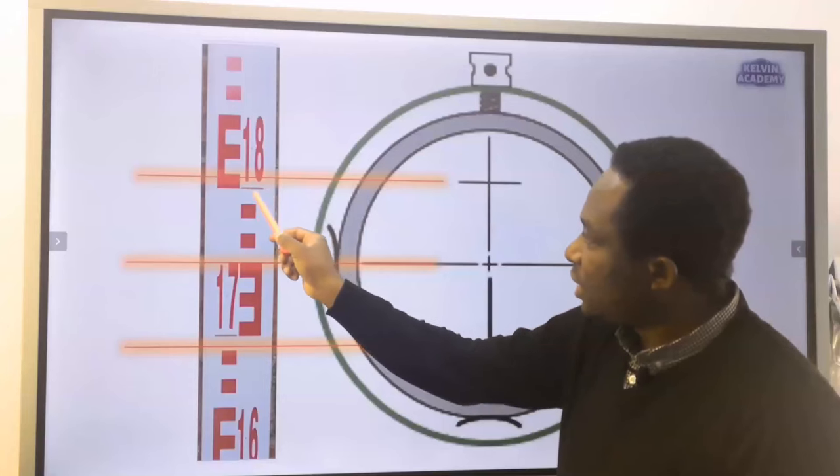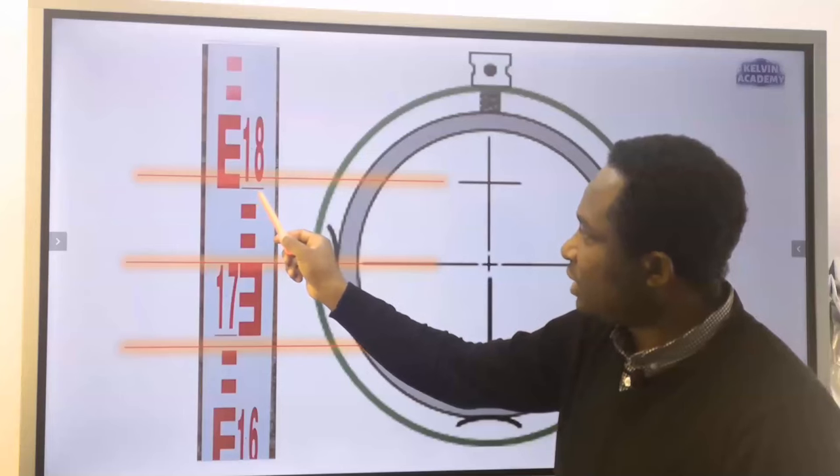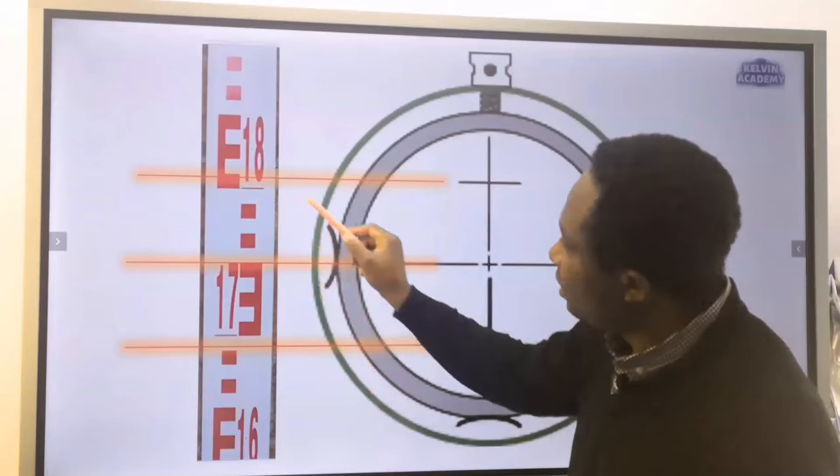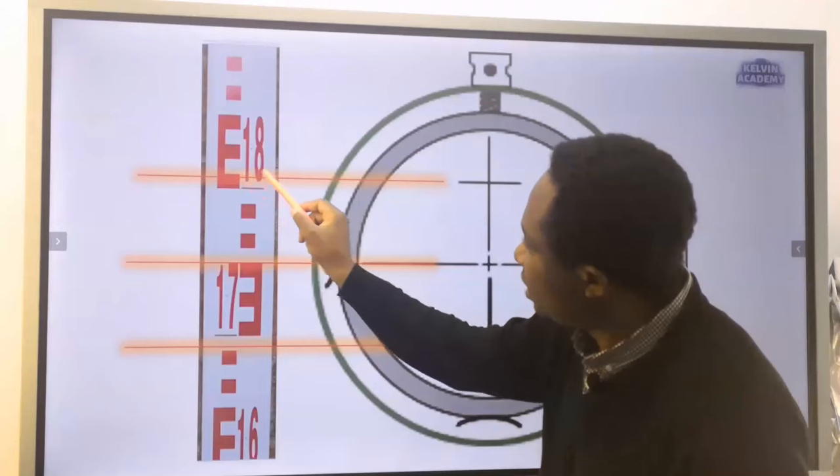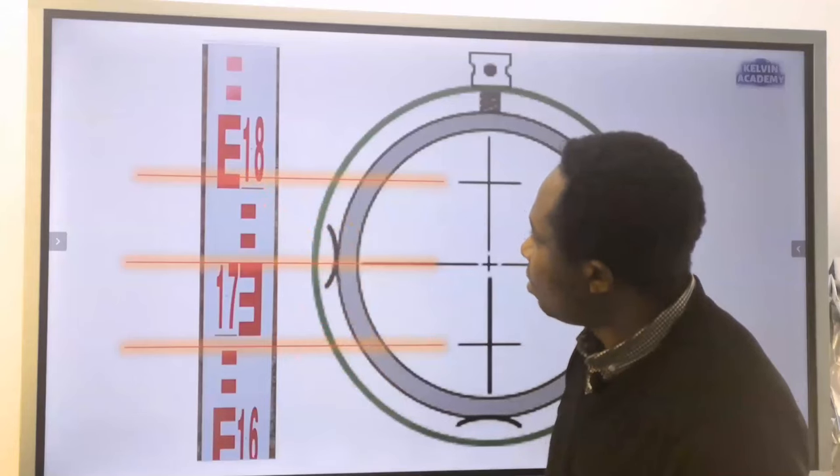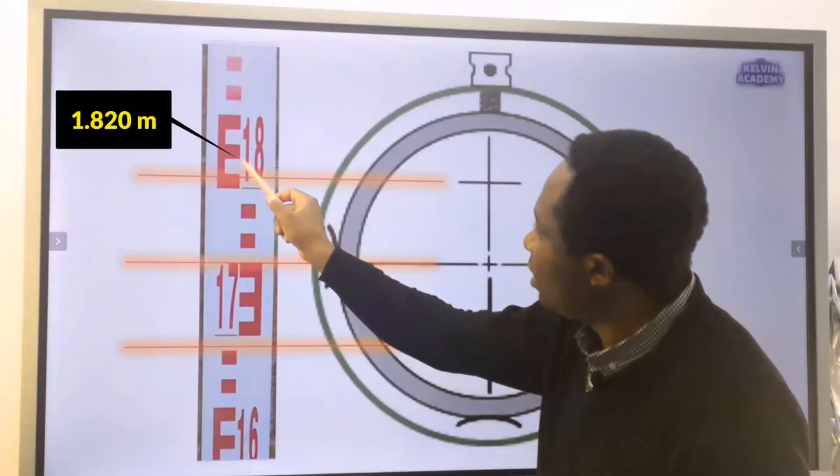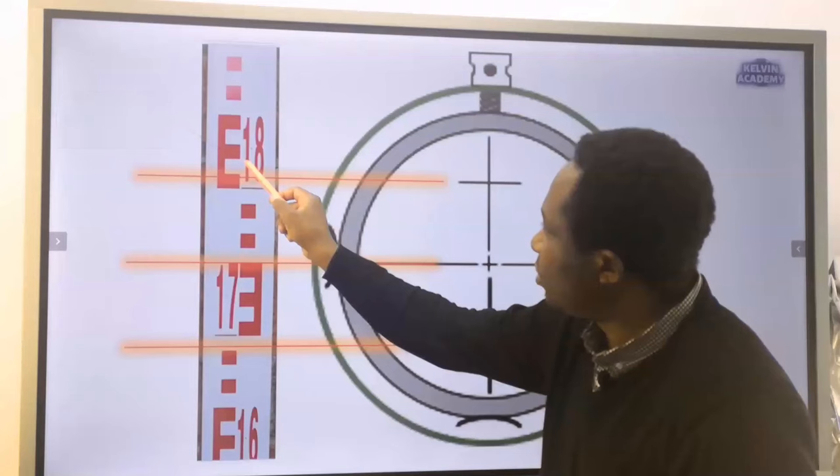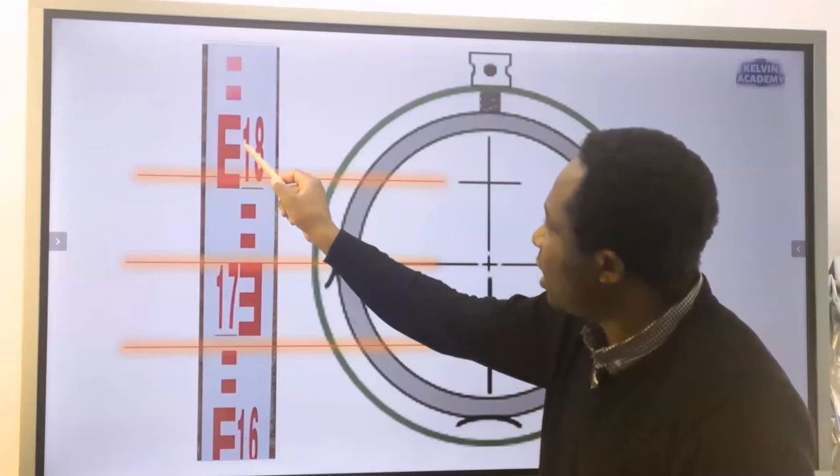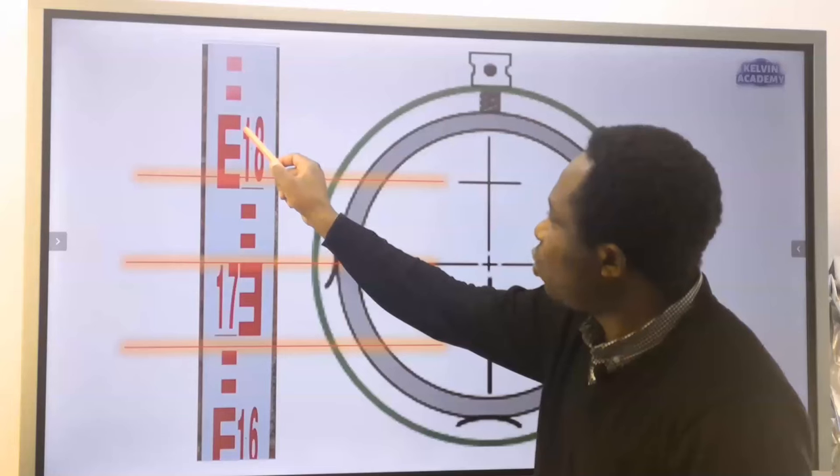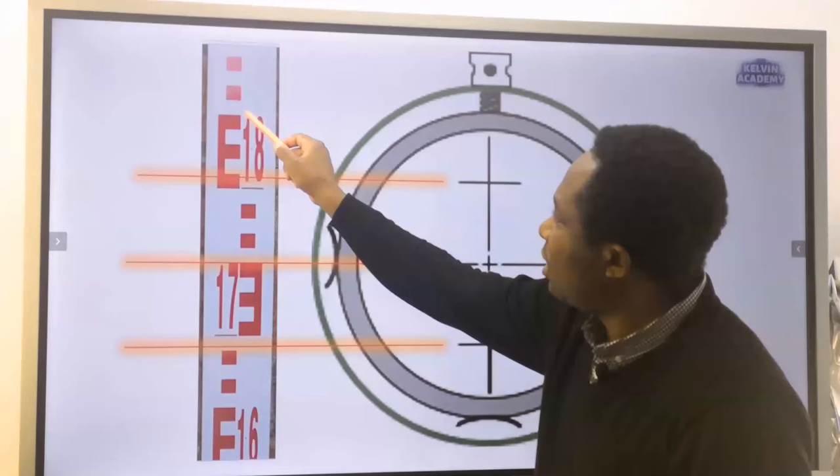This is the beginning which is 1.800. This next point is 1.810. This next point is 1.820. This is 1.830. This is 1.840. This is 1.850.